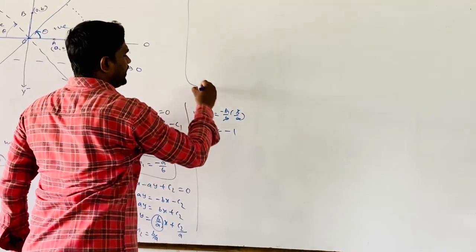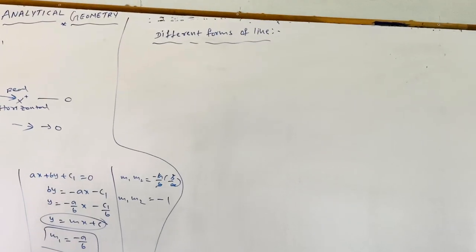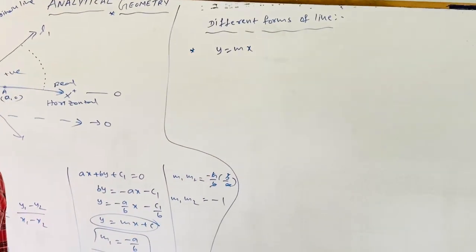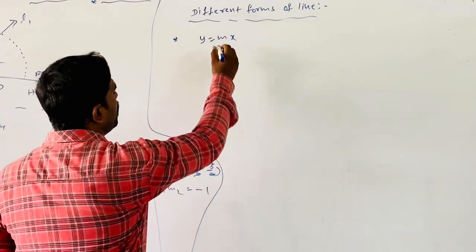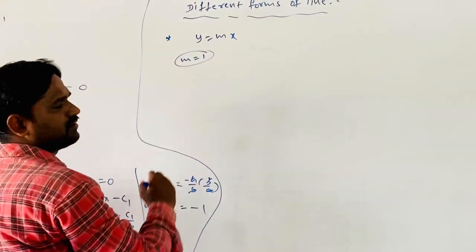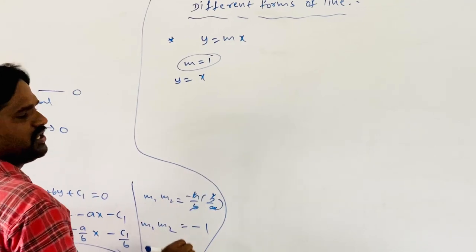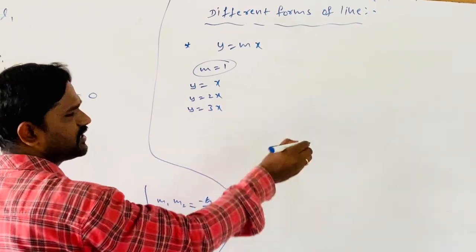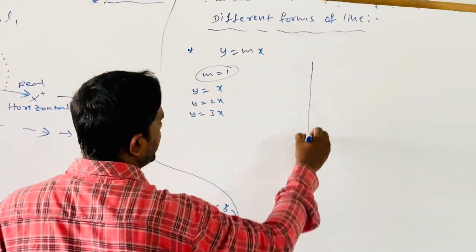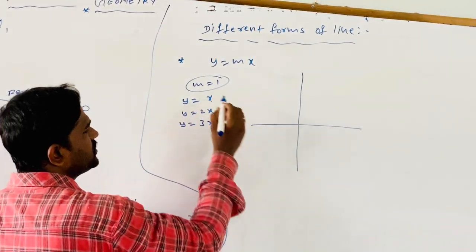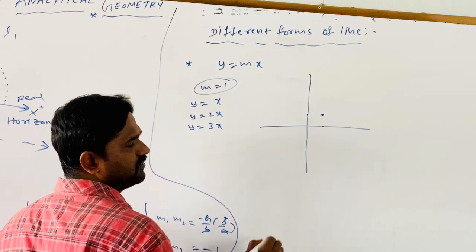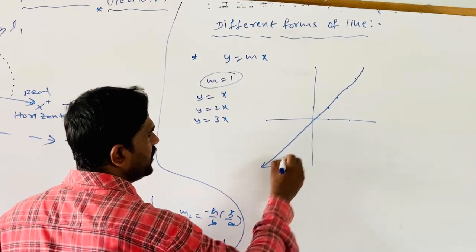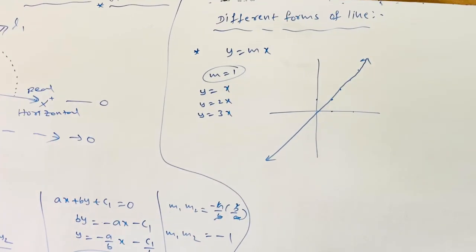Now let us look at different forms of a line. The first form is y = mx, which is a line passing through the origin. For example, if m = 1 we get y = x; if m = 2, y = 2x; if m = 3, y = 3x, and so on. A rough diagram of y = x shows a linear equation passing through the origin.